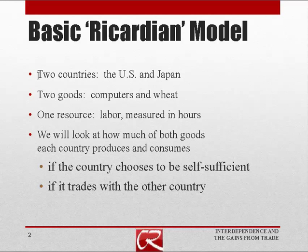The idea is that we're going to have two countries — the U.S. and Japan — and they can produce two goods: computers and wheat. They have just one productive resource, labor. We're going to look at how much of the two different goods each country can produce and consume.